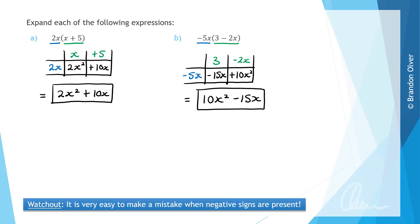The thing to watch out for here is that it is very easy to make a mistake when negative signs are present. That's why using a grid can be so helpful, as long as you remember to bring the negative signs down with each term when you write it in your grid.